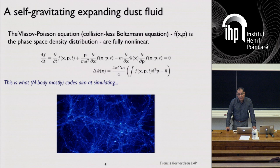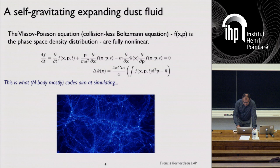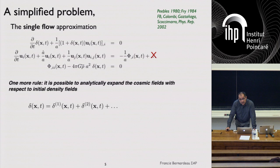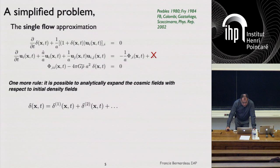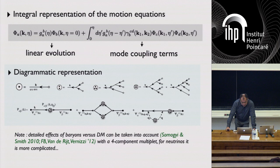We have a well-defined problem: a set of particles in an expanding universe that are self-gravitating, so only gravity is at play. The simplified approach is to go to single-flow, motivated by the fact that assuming dark matter particles — cold dark matter — their velocity dispersion is small compared to the velocity gradients induced by gravity. This gives a closed system involving only the density and velocity field.